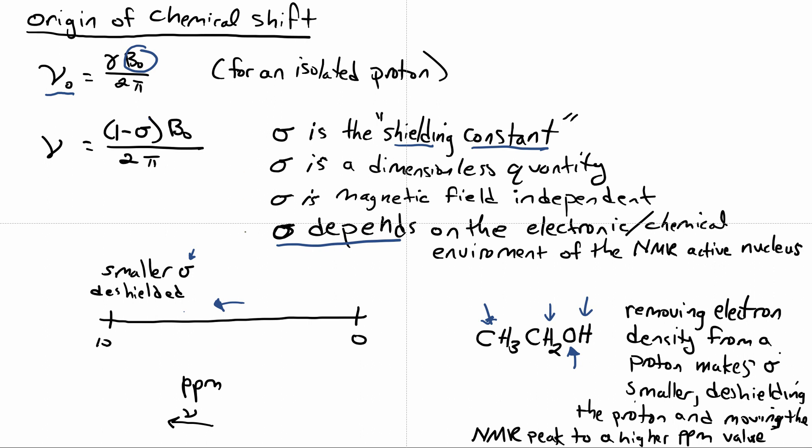So that's where we say that's the origin of the chemical shift. The shielding constant that is dependent on the electronic slash chemical environment of the proton, and depending on its value, it's going to determine ultimately where your chemical shift is.